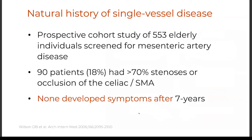What should we do with asymptomatic disease? A landmark study by Dr. Wilson was a prospective cohort of 553 elderly individuals who were screened. They identified 90 patients — 18% of the cohort — who had high-grade stenosis or occlusion of the celiac or SMA. None of them had symptoms over a seven-year follow-up period. The classic board answer: you don't intervene on an asymptomatic isolated mesenteric lesion. There is no indication for prophylactic revascularization on these patients.